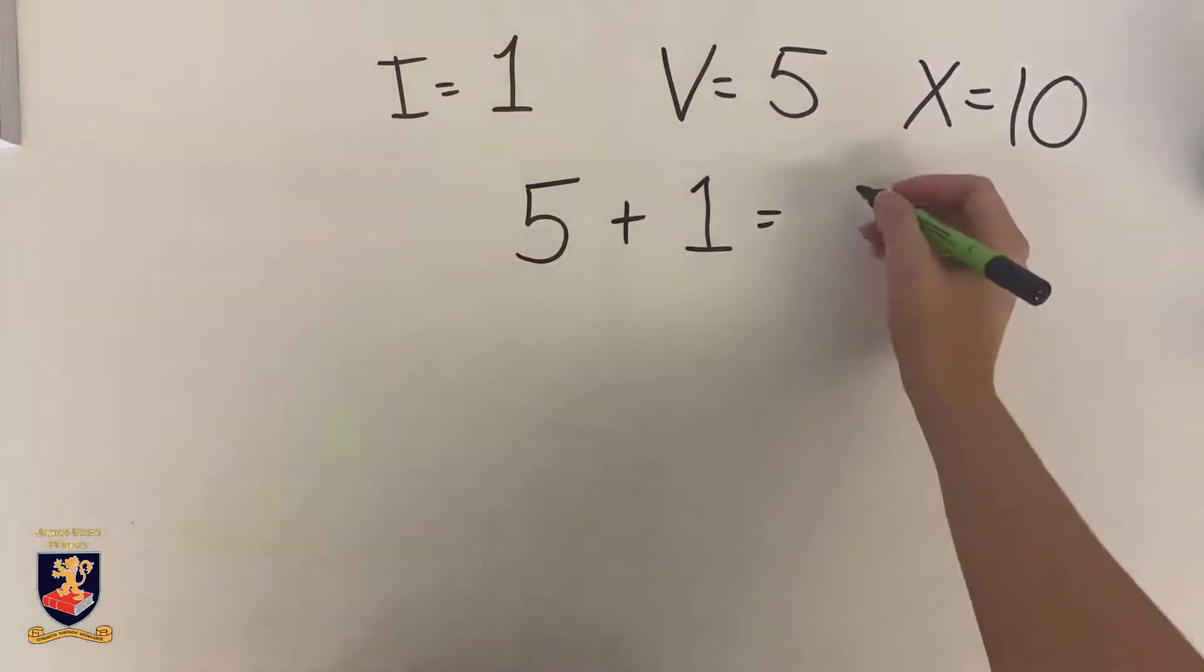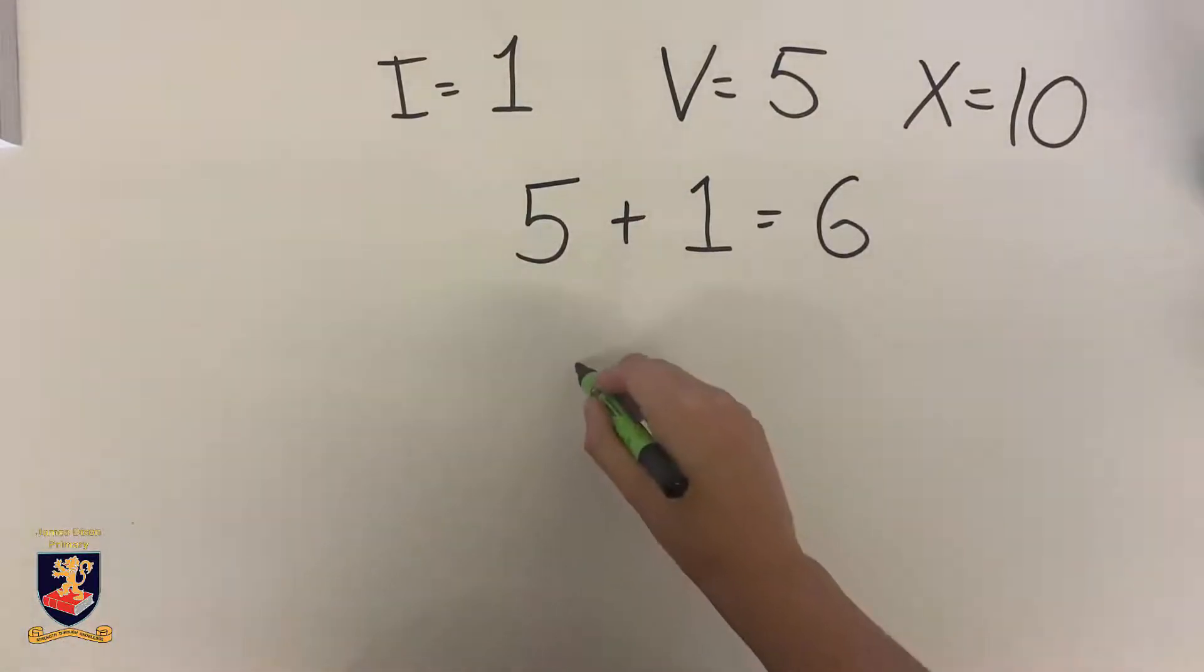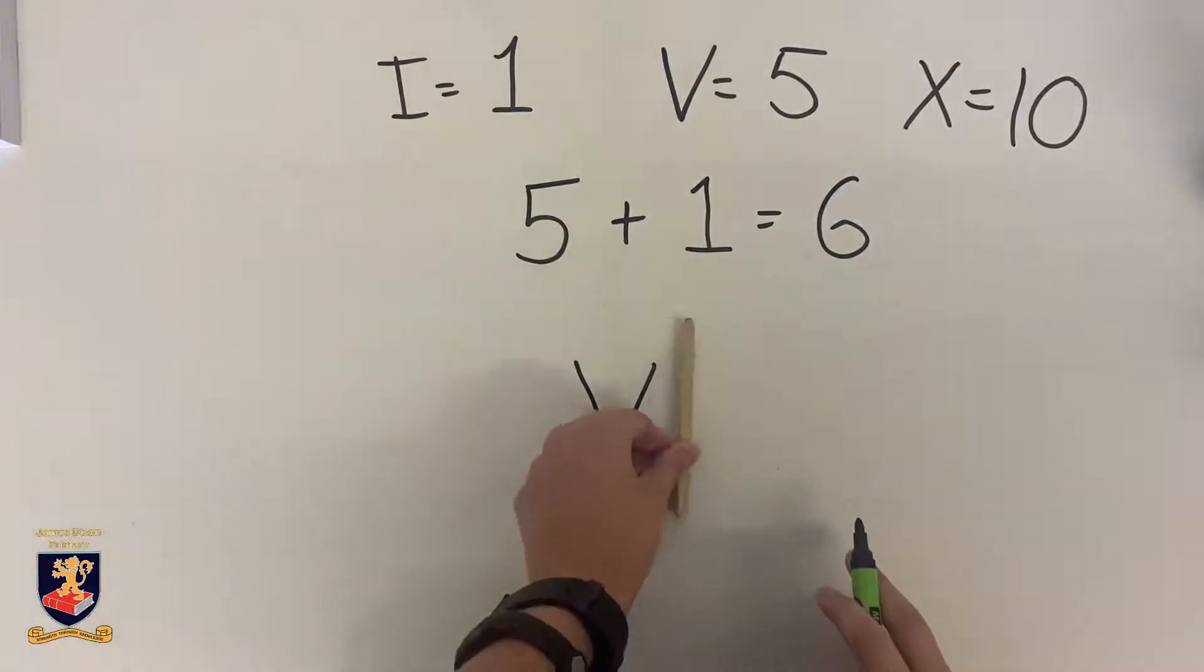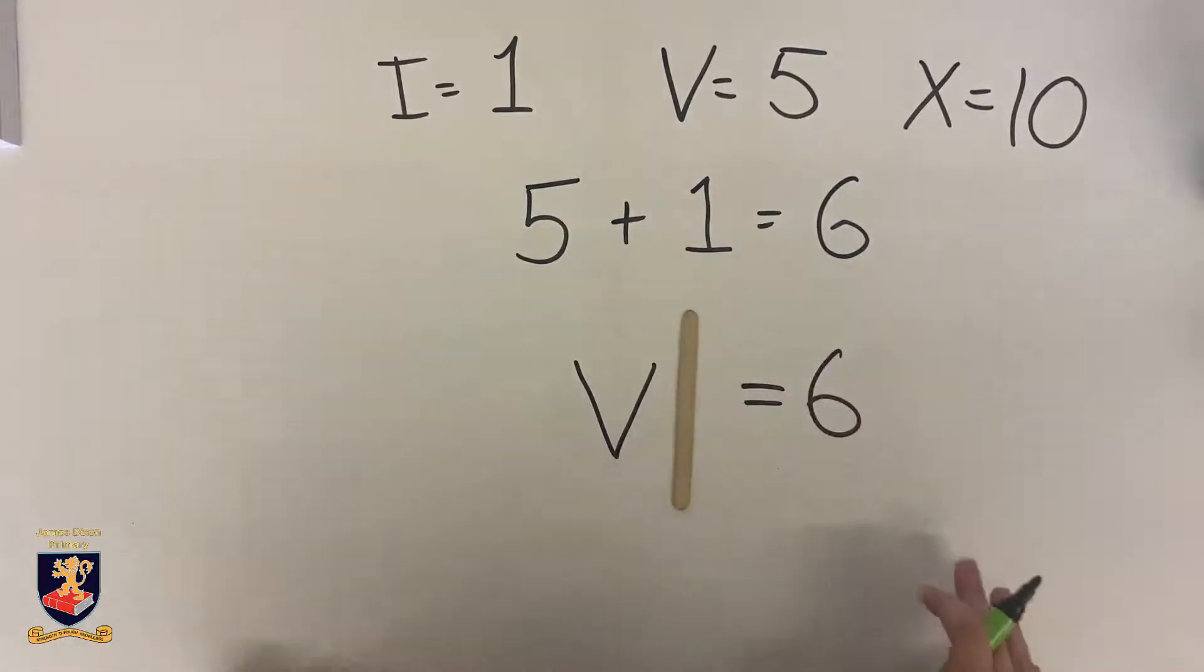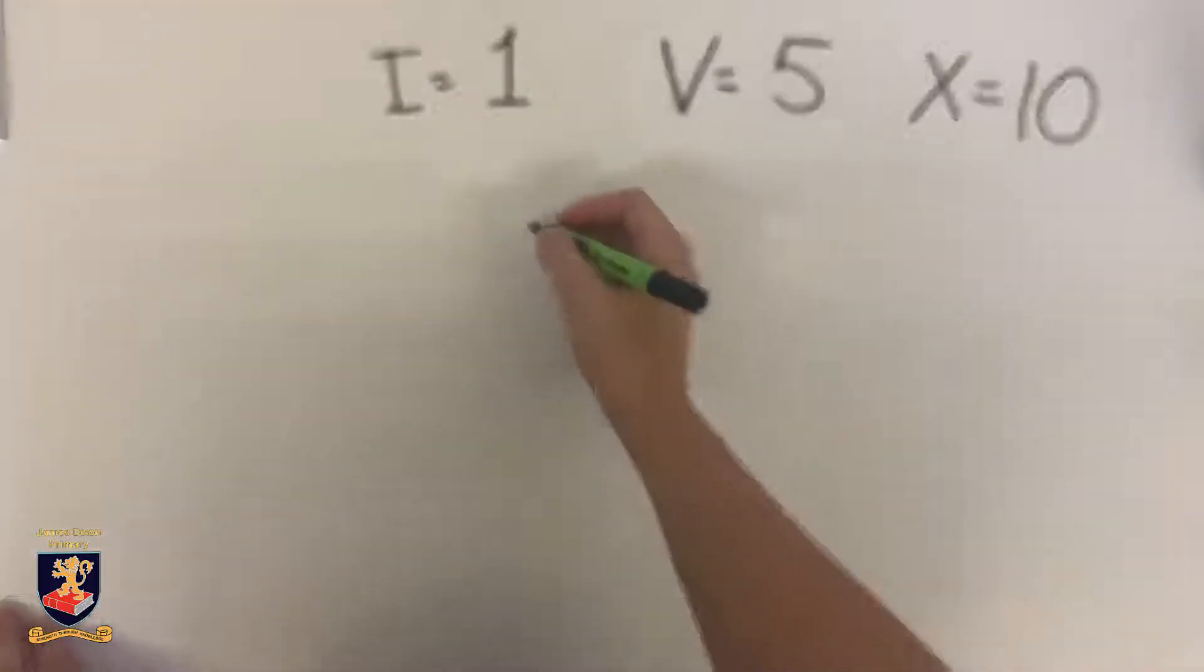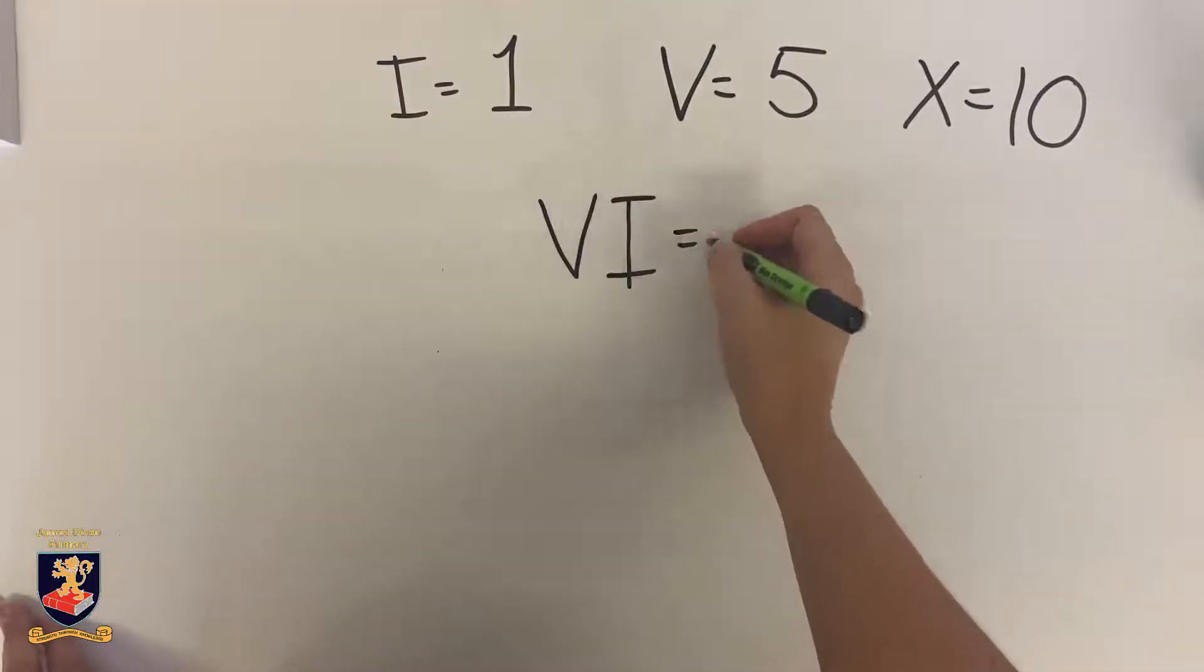When we want to show six, we know that five plus one equals six, so six is one more than five. Our one goes on the right-hand side. When we write Roman numerals that are greater than five, we must start with V to show that six is one more than five.